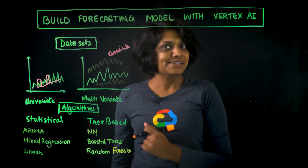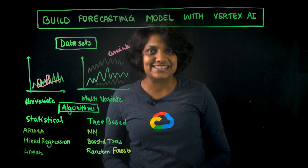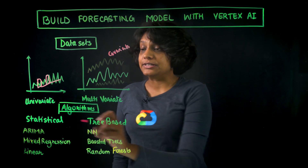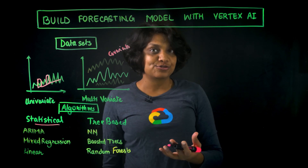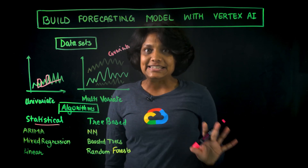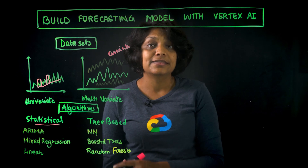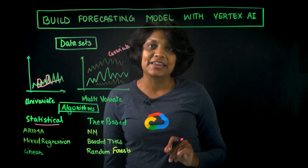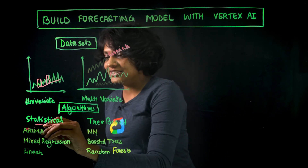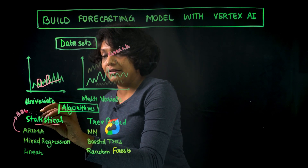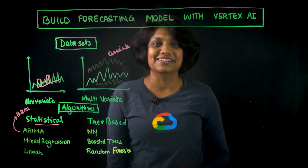Here are the algorithms we can use for forecasting. The most popular methods today are statistical methods, also called classical methods. There are many types of statistical models, including ARIMA models, that are used for most popular use cases. Google offers an advanced ARIMA Plus model with BQML, which is BigQuery ML.